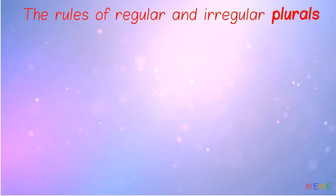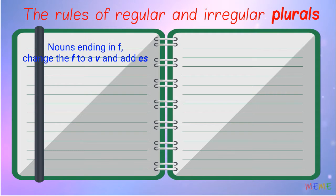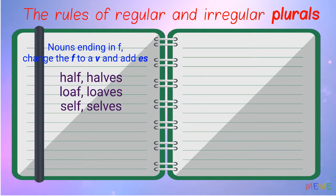For some words ending in -f, change the -f to a -v and add -es. Half, halves. Loaf, loaves. Self, selves. There is an exception to the rule.